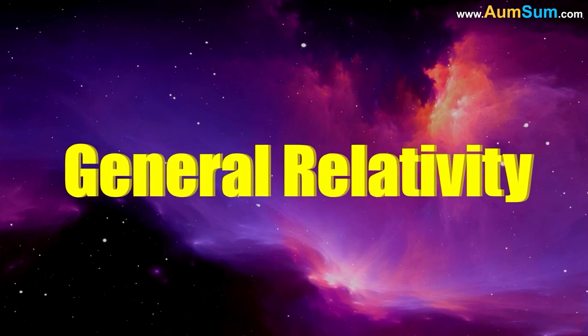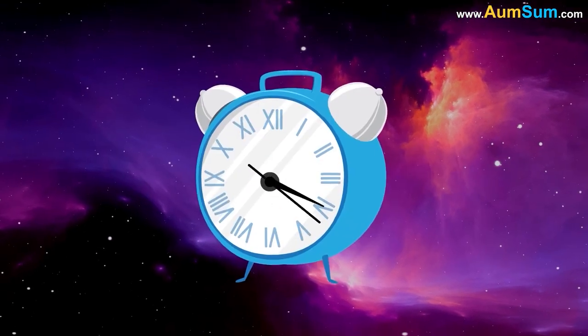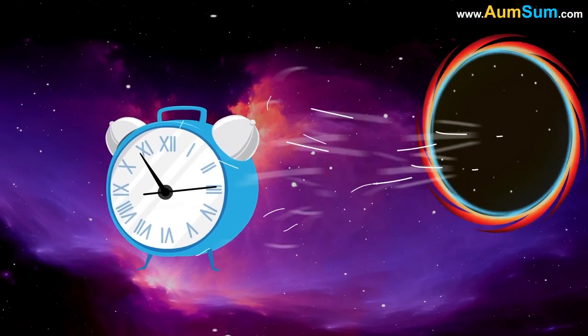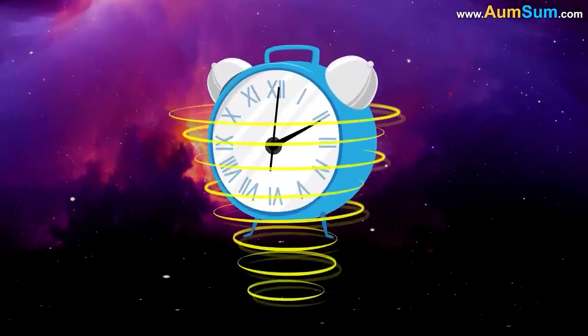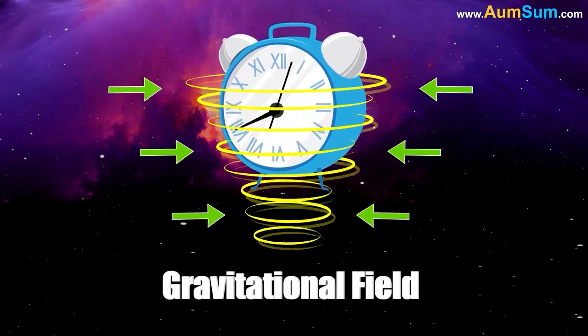According to the Theory of General Relativity, time slows down near a black hole due to a phenomenon called Gravitational Time Dilation. This is the effect a gravitational field has on the passing of time around it.